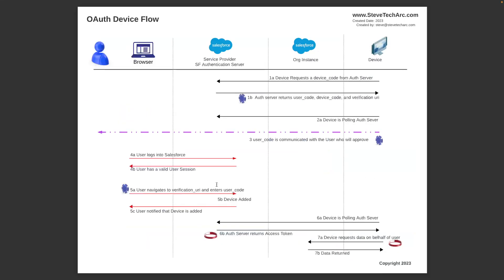This is an example set of swim lanes which will walk us through the scenario where we have a device — it could be a smart TV, or any other device that does not have the ability to have a keyboard, screen, and entry. What it does need to do is be able to display some form of a code to the user. This device will be calling into Salesforce, acting on behalf of a user — not with its own fixed username and password, but with the privileges and capabilities of a specific user who will approve them.